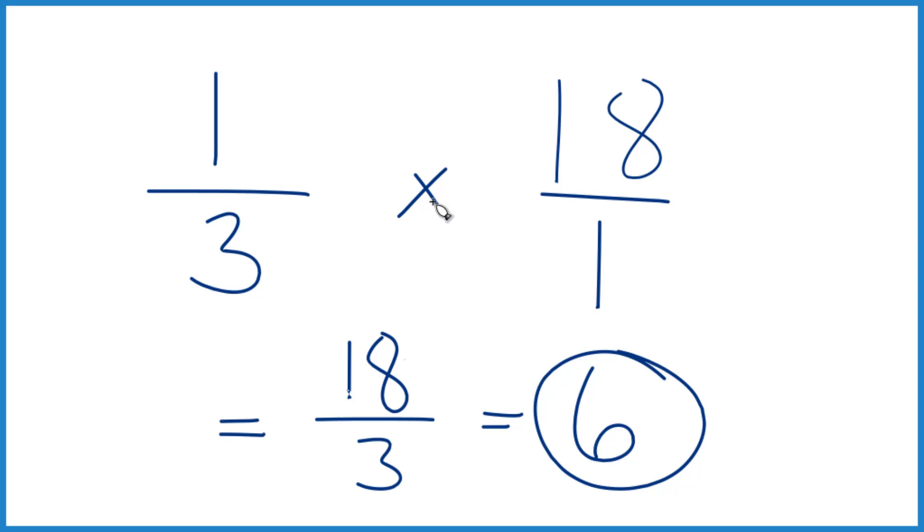So instead of 'of,' we multiplied. We changed the number over 1 so everything lined up, and then we could figure out the answer by multiplying the numerators and denominators.